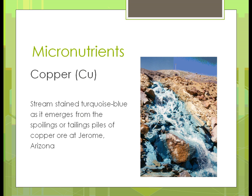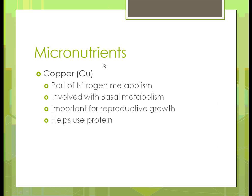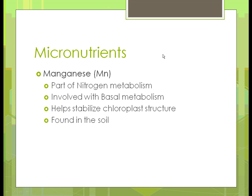Here's a picture of a stream that's turquoise blue in color because of a copper mine that wasn't properly closed down — you can see the colored water coming out. It's a pretty color, but not good for the environment. Copper is used for nitrogen metabolism and in cell development of basal metabolism. It's very important for reproductive growth and helps use the protein found in sugars. Manganese is also part of nitrogen metabolism and involved in basal or cell metabolism. It helps stabilize the structure and is found naturally in the soil.